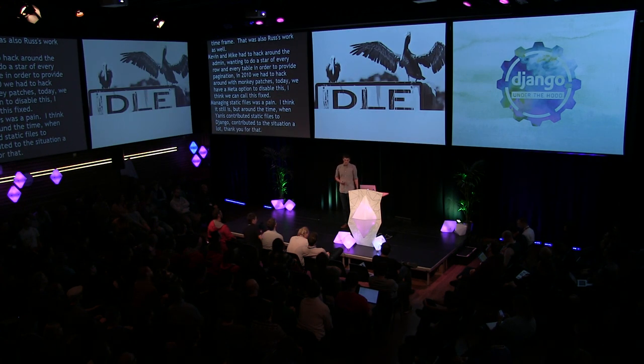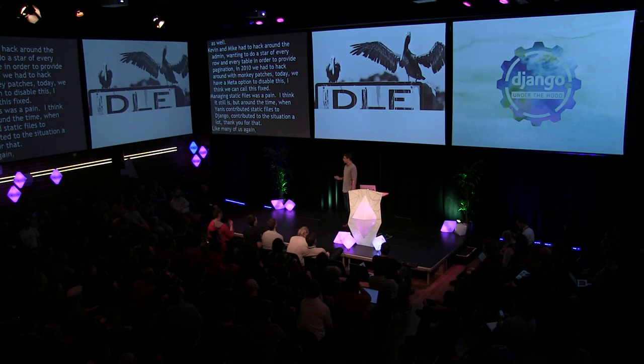Like many of us, Instagram had trouble with Django's transaction management, which used to be pretty bad. It would wrap reads in unnecessary transactions, do extra round trips to the database, and leave Postgres connections hanging in an idle-in-transaction state. But since Django 1.6, this one is also fixed, thanks to Aymeric.